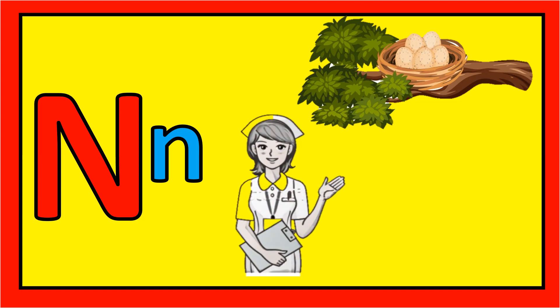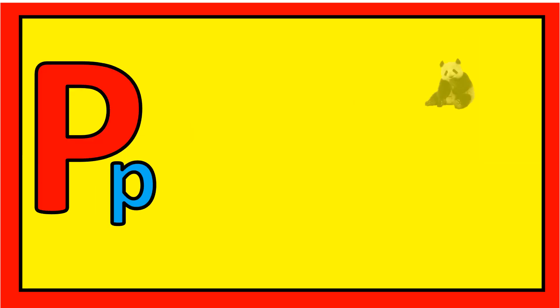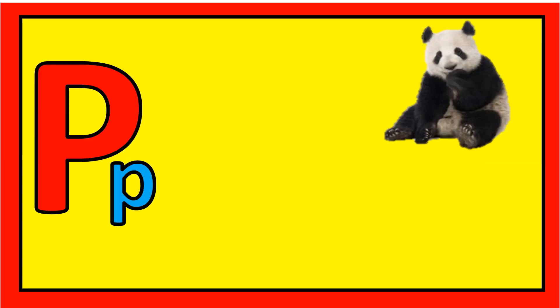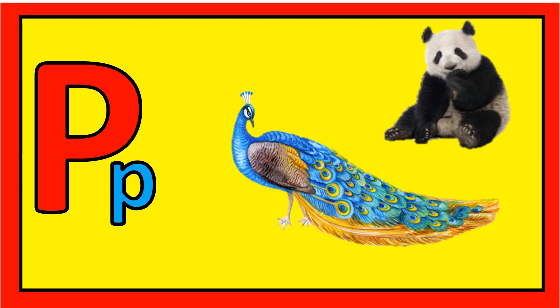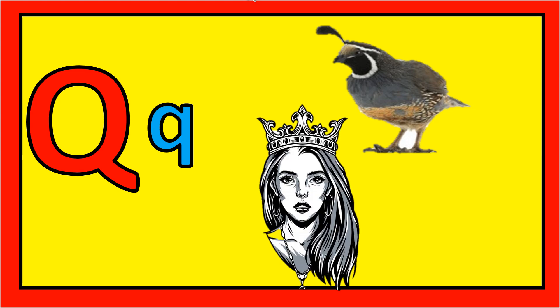O for orange, O for ostrich, P for panda, P for peacock, Q for quail, Q for queen.